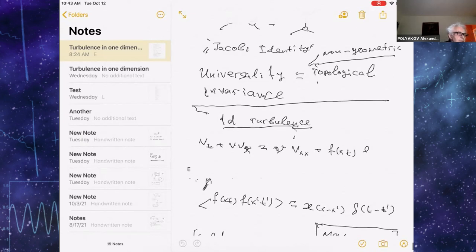The simple and commonly accepted model is that you have the Navier-Stokes equation. Basically, what is written here is one-dimensional Navier-Stokes equation without pressure and with external force F.